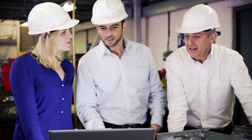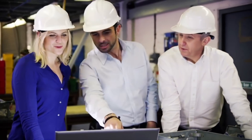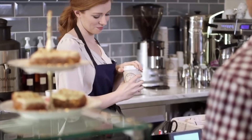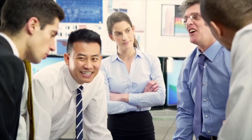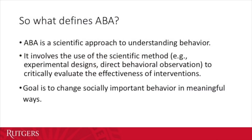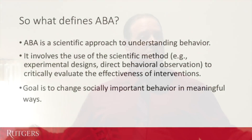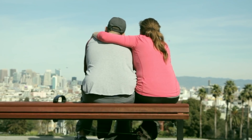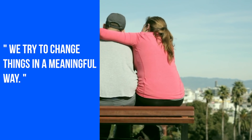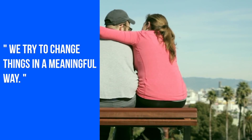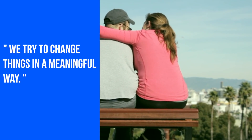So what does define ABA? It's a scientific approach. It's not a thing, it's not a procedure. It's an approach to problem-solving. It involves using the scientific method — single-subject case design, reversals, things like that. And we just try to change things in a meaningful way. That's what defines behavior analysis.